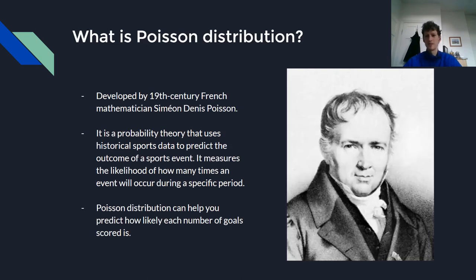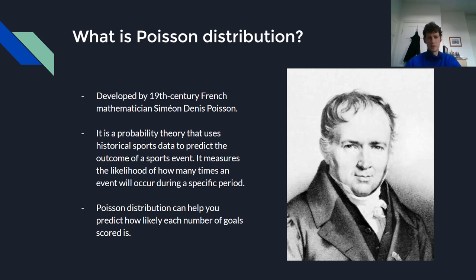So what is Poisson distribution? It was developed by 19th century French mathematician Simeon Denis Poisson. It is a probability theory that uses historical sports data to predict the outcome of a sports event. It measures the likelihood of how many times an event will occur during a specific period. In our case, Poisson distribution can help us predict how likely each number of goals scored is going to be.